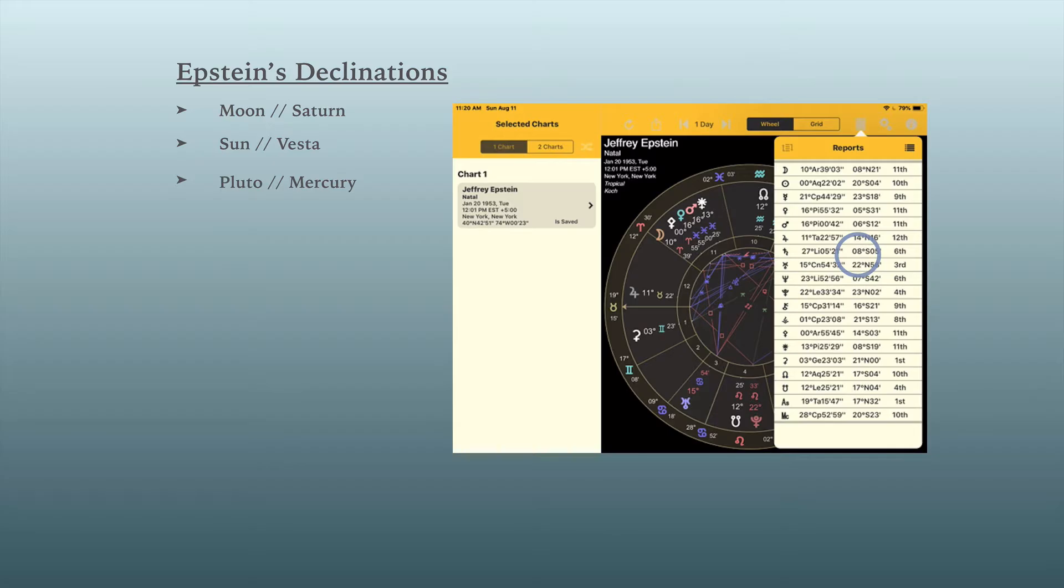but also just emotionally, he had a tendency to feel, to get into the dumps and feel very depressed. At least that would, that's often the propensity and that's often the potential when you have a moon Saturn arrangement. It doesn't apply to everybody. Other things can counterbalance that most definitely.